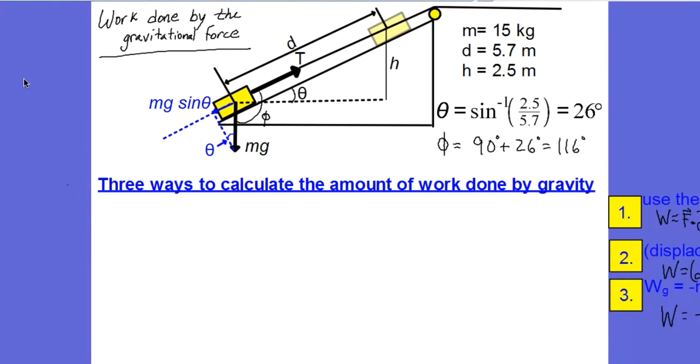So let's look at sample problem seven dash five. And we're asked to find the work done by the gravitational force as a box is pulled up a ramp, a frictionless ramp. So the mass of the box is 15 kilograms. The distance along the hypotenuse that the crate is going to be pulled is 5.7 meters. And the change in height is going to be 2.5 meters.